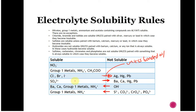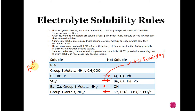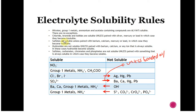Sulfates tend to be soluble unless they're bonded with barium, calcium, mercury, or lead. Then if you have barium sulfate, calcium sulfate, mercury sulfate, or lead sulfate, it is insoluble — there's going to be a non-electrolyte there. So: sulfates are soluble unless paired with barium, calcium, mercury, or lead, in which case they become insoluble.